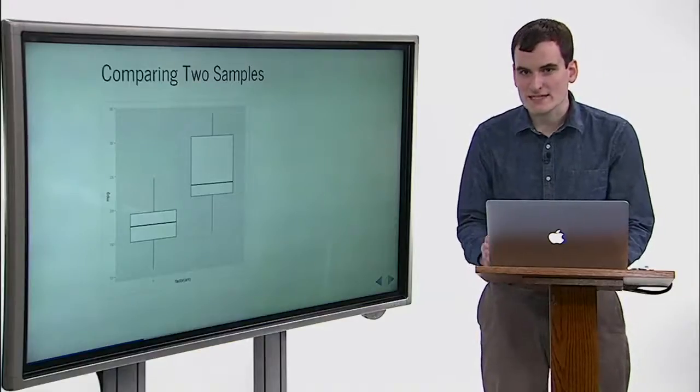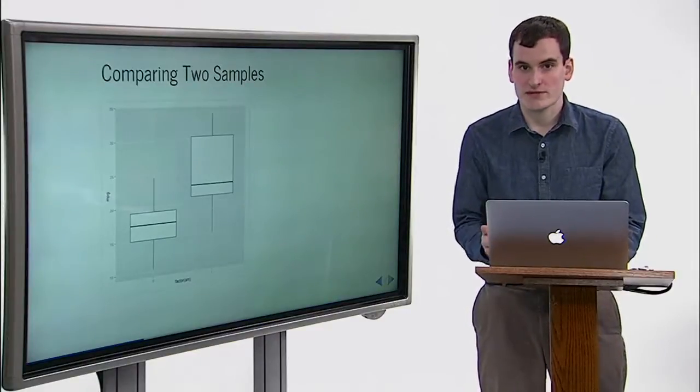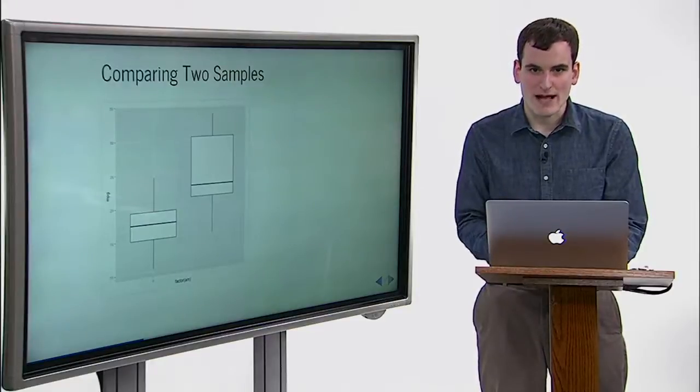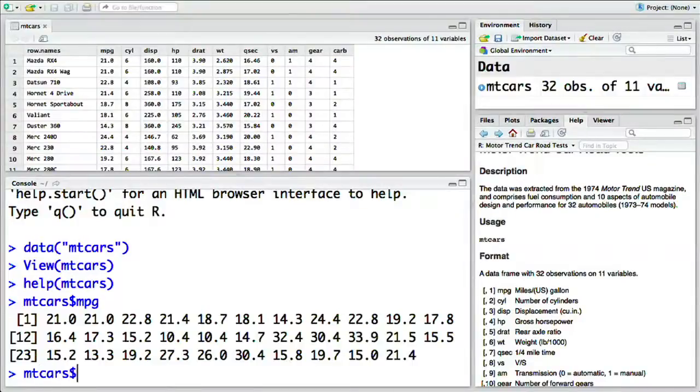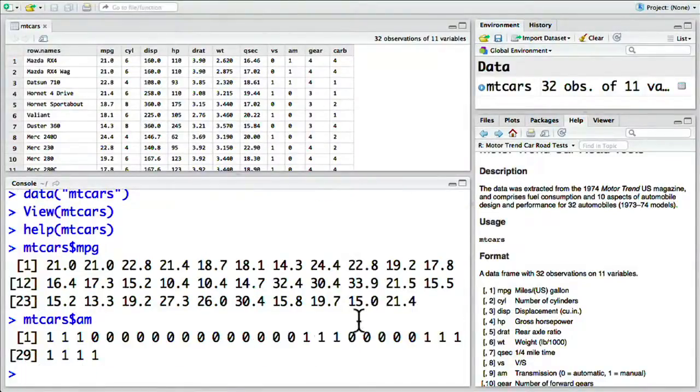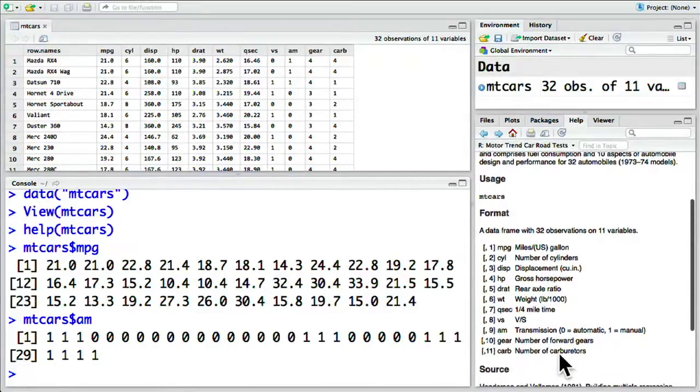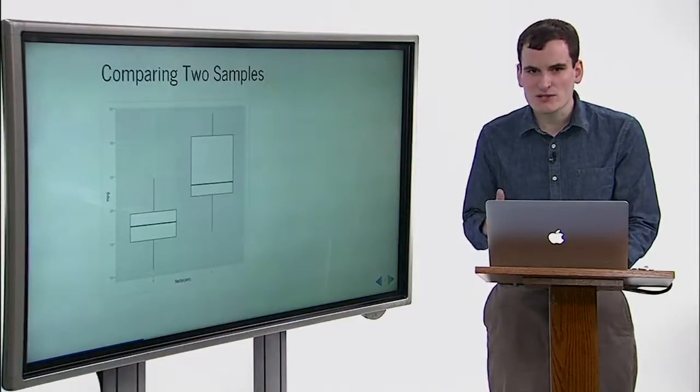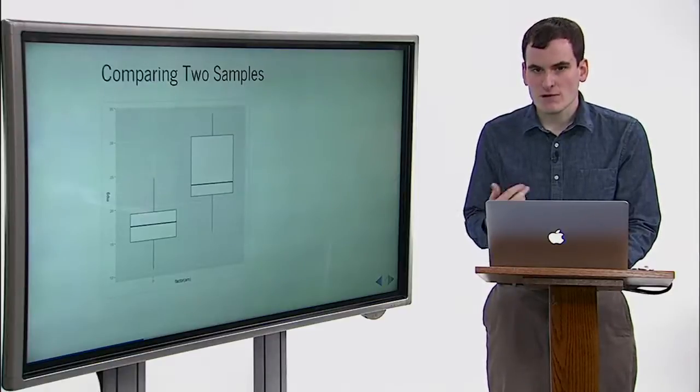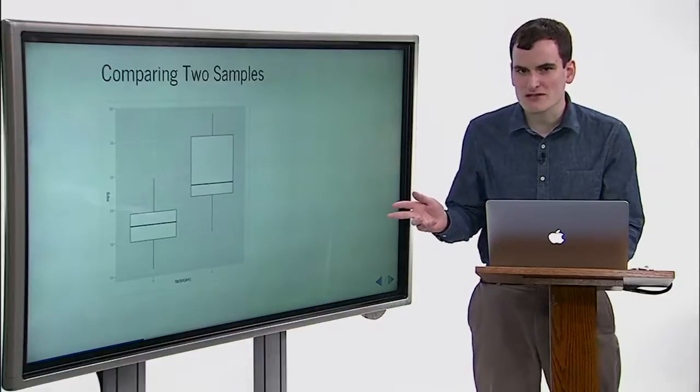Let's say we're interested in testing the hypothesis that cars with an automatic transmission use more fuel than cars with a manual transmission. Whether cars have an automatic or manual transmission is found in the AM column, MT Cars dollar sign AM. We can see from the Help page that zero represents an automatic transmission and one represents a manual transmission. Before we perform a statistical test, it's always a good idea to create a graphical representation. Recall that a box plot compares the distributions of multiple groups, and so is well suited for this task.